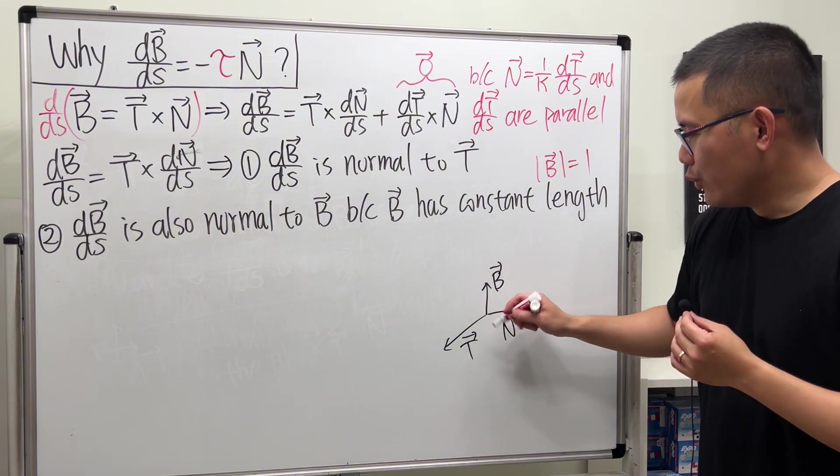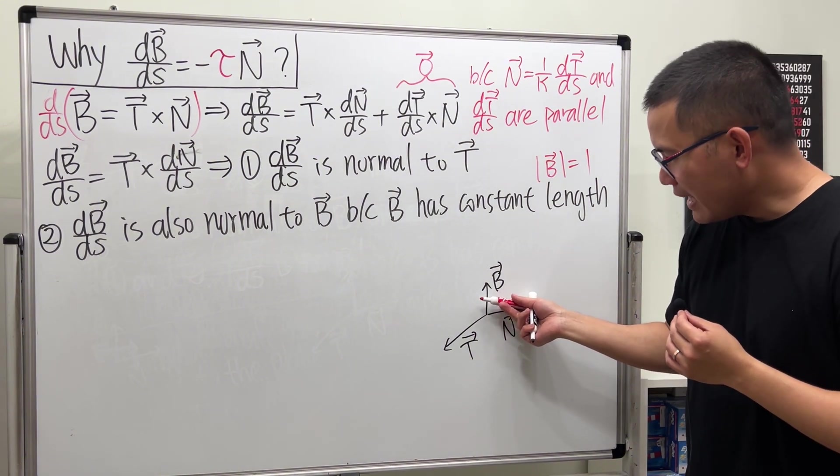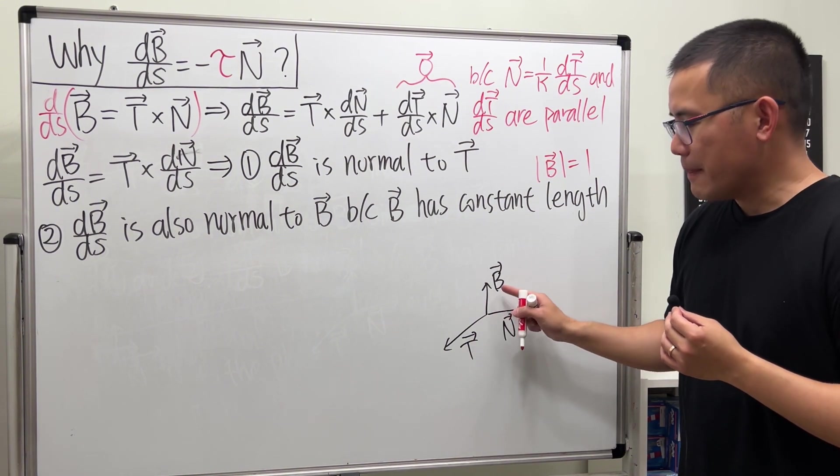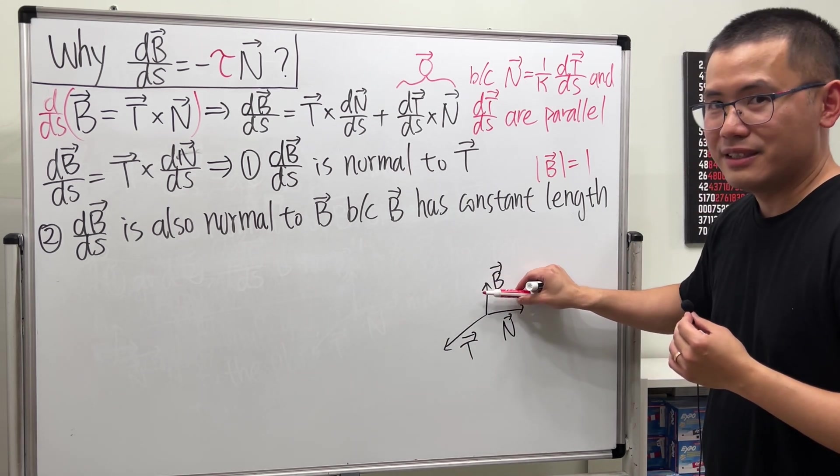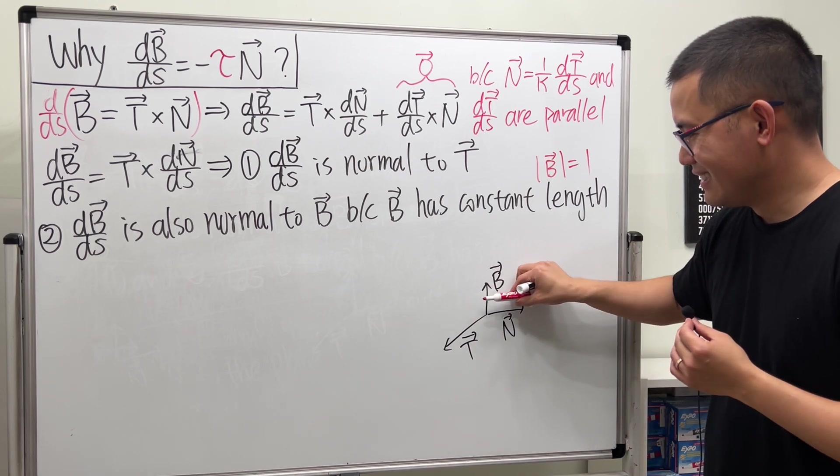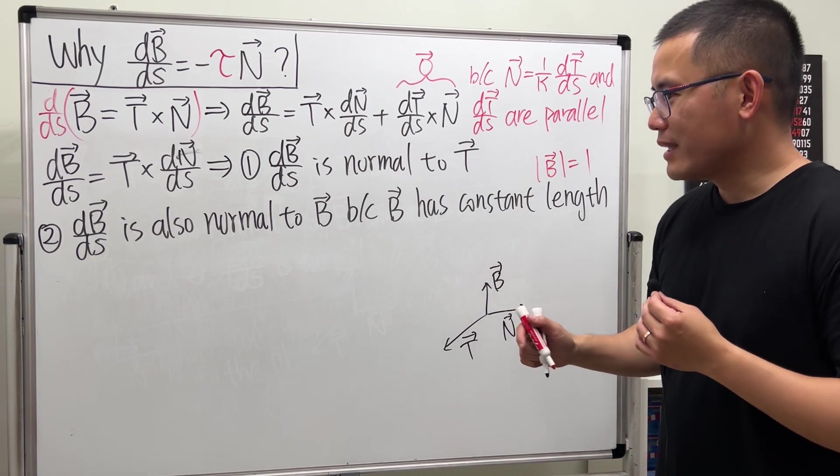How can we have a vector that's normal to both this and that? Well, it must be normal to the plane formed by T and B, right? So imagine we have a wall, and then the vector must be like this, or maybe like that. So I will write this down right here.